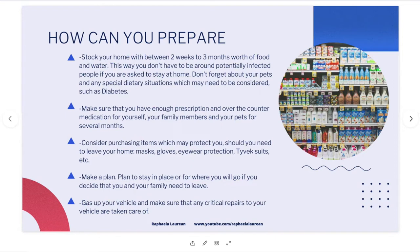As of Saturday, February 29, there are 60 countries with cases, so this is already a global problem with serious consequences. How can you prepare? Not to instill panic — you have a responsibility to protect yourself and your family. Stock your home with between two weeks and three months worth of food and water so you don't have to be around potentially infected people, whether you're asked to stay home or not.